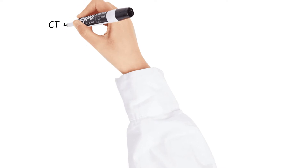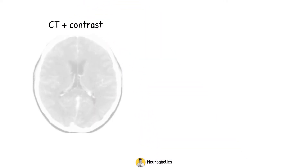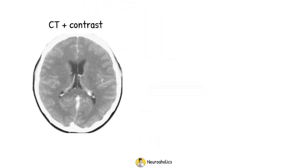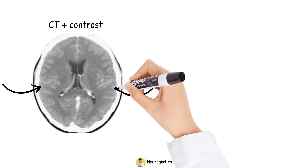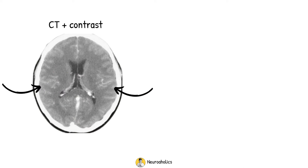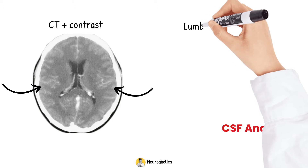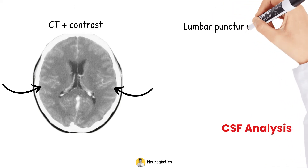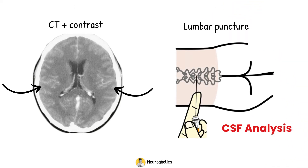Head CT with contrast is also recommended for evaluating leptomeningeal enhancement. The gold standard for the diagnosis of bacterial meningitis is, of course, analysis of the CSF. The CSF is usually obtained by lumbar puncture or by surgery if the patient undergoes ventricular peritoneal shunt or extraventricular drainage.